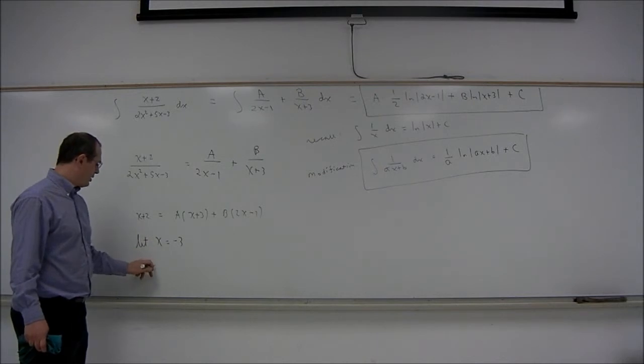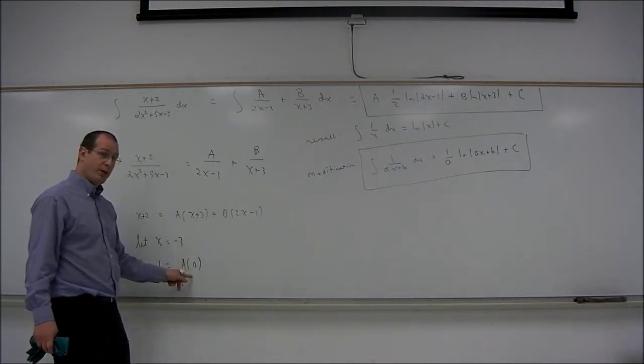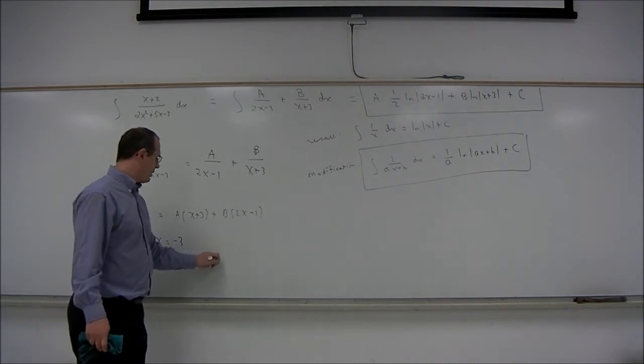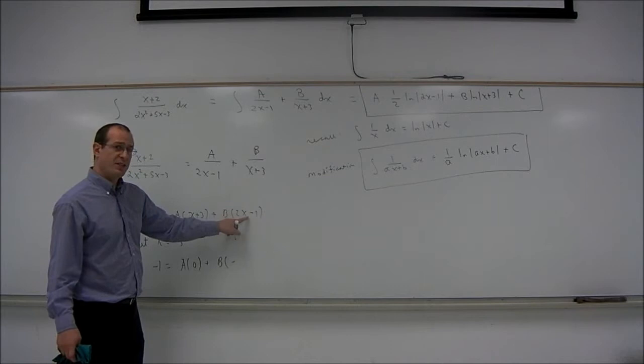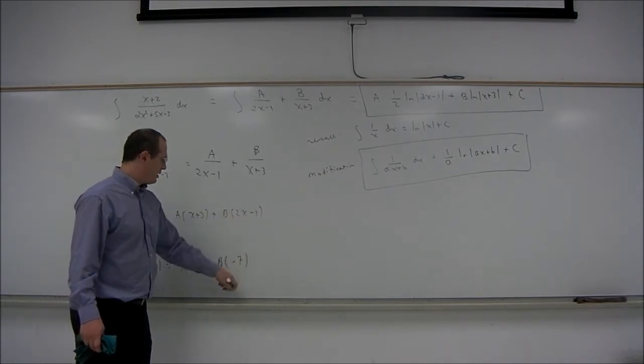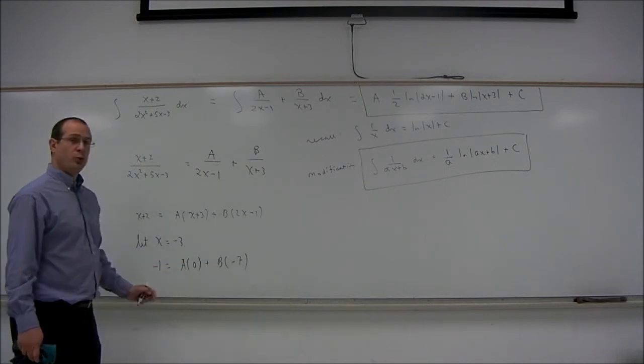then x plus 2 is negative 1. That will equal a times 0, that's the point, plus b times, let's see, negative 3 for x, that's negative 6 minus 1 is negative 7. So b is equal to 1 seventh.